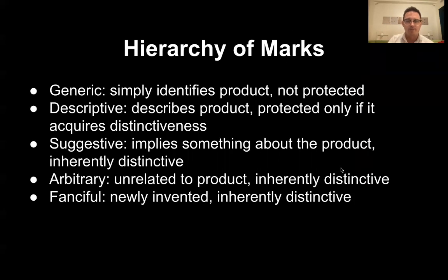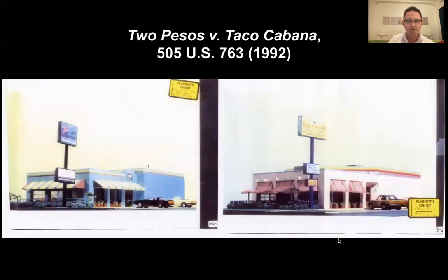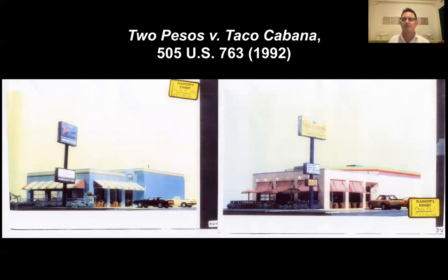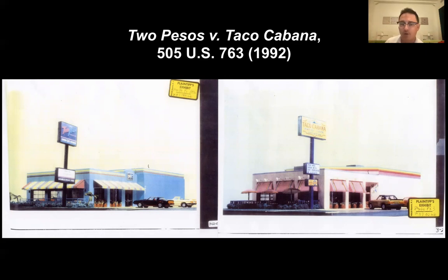Moving on to Two Pesos v. Taco Cabana. Taco Cabana was a Tex-Mex restaurant chain with stores in Texas that gradually became quite popular. Some years later, another similar Tex-Mex chain called Two Pesos opened up nearby, but not in the same geographic area. The two chains kind of coexisted for quite some time.